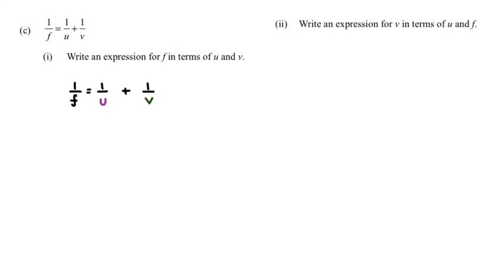That only works if it's one exact fraction equals an exact fraction. What you need to do is combine the right-hand side together. Between u and v, the common factor is uv. So first, we multiply the denominator and numerator of 1/u by v. Then for 1/v, we multiply both the denominator and numerator by u.